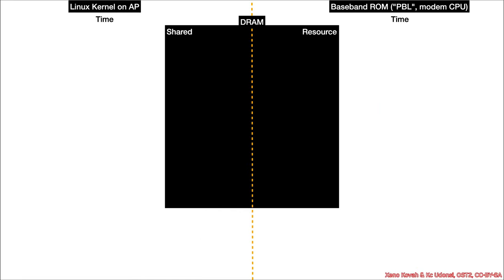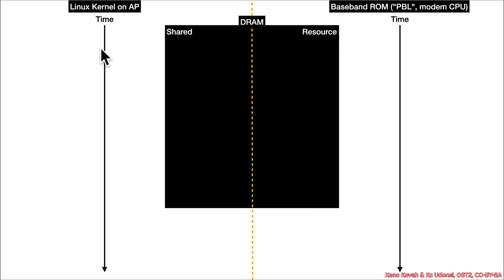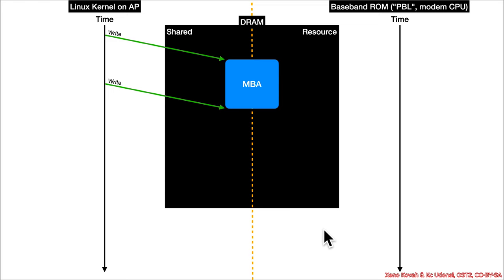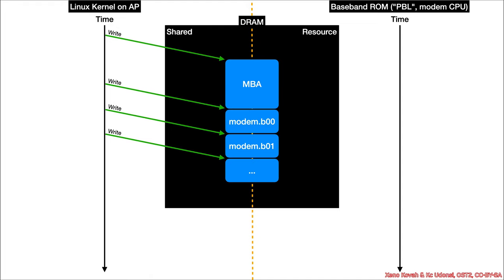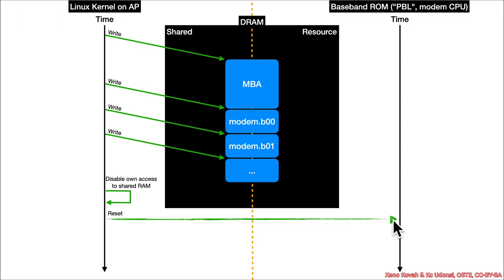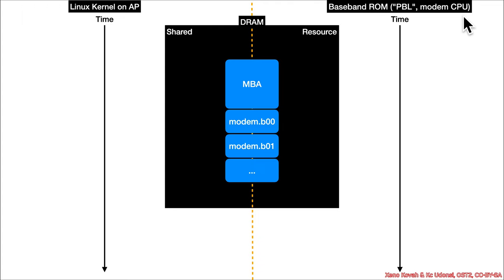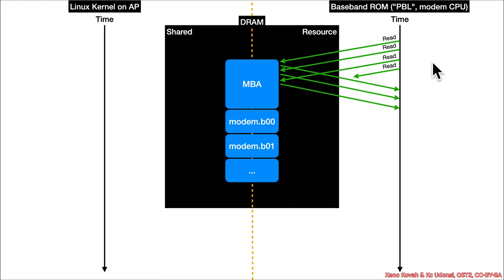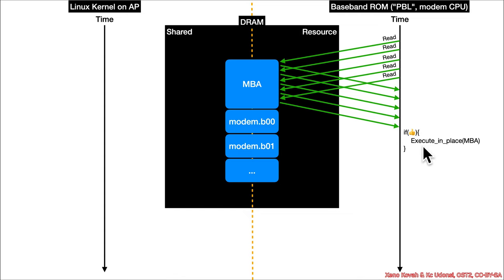The Linux kernel on the application processor writes the MBA and modem firmware images into RAM — a shared resource between the AP and the modem CPU. After writing all those files, it disables its own access to shared RAM, then sends a reset signal to the modem CPU telling it to restart and begin authenticating the MBA. Upon receiving this signal, the ROM or PBL on the modem CPU starts reading and verifying the MBA, performing a digital signature check.